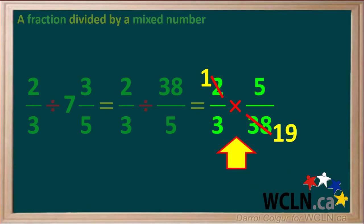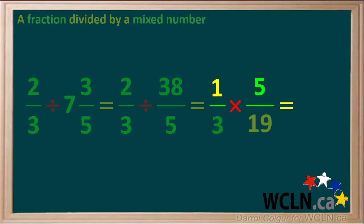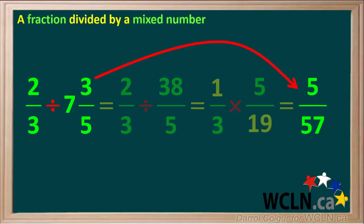So we're left with 1 over 3 times 5 over 19. Multiplying the numerators, 1 times 5 gives us 5. And multiplying the denominators, 3 times 19 gives us 57. So the answer to 2 thirds divided by 7 and 3 fifths is 5 fifty-sevenths. This is a proper fraction, so we cannot change it to a mixed number. Also, it can't be reduced to simpler terms.